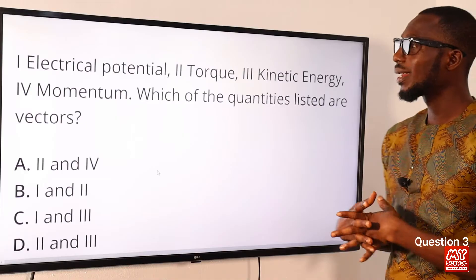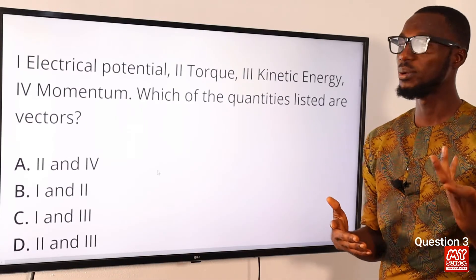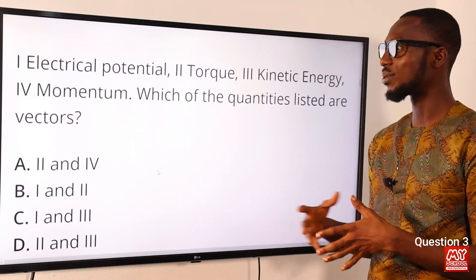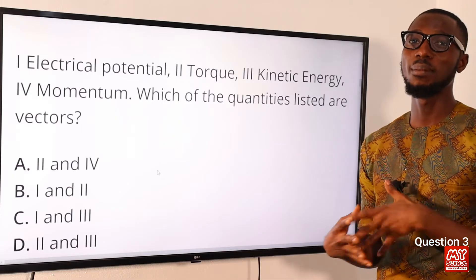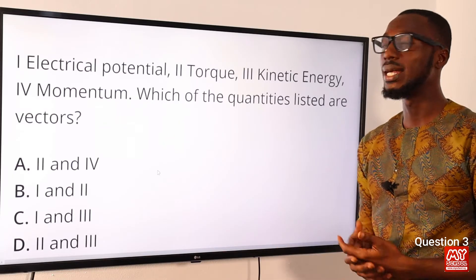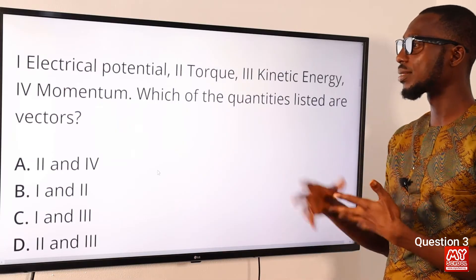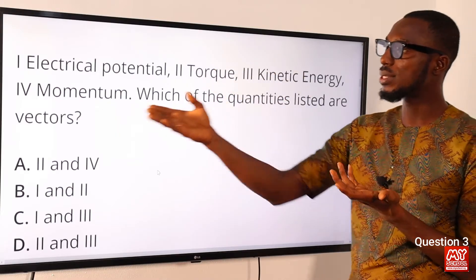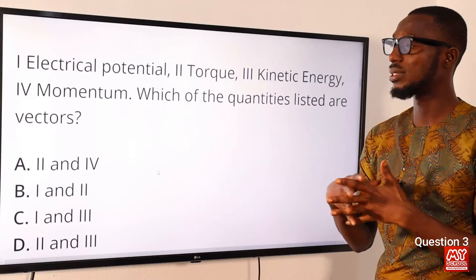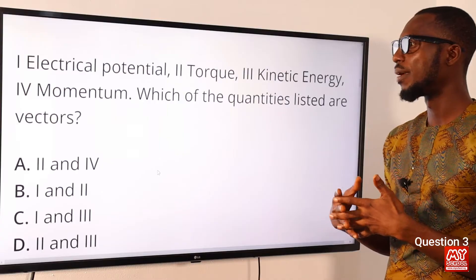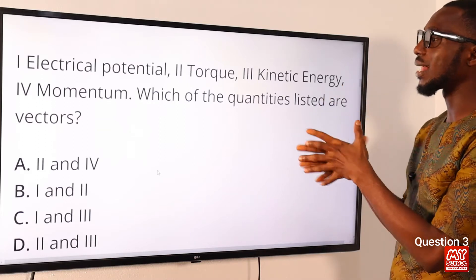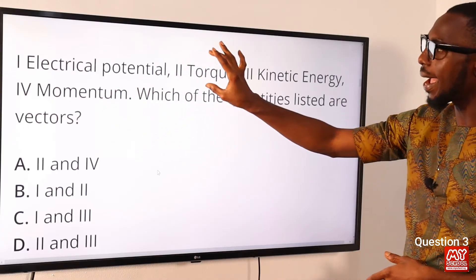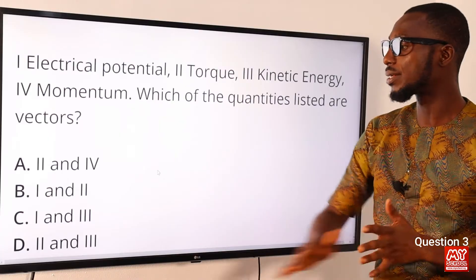Question three: electric potential, torque, kinetic energy, momentum — which of these quantities are vectors? Scalar quantities include electric potential, kinetic energy, length, mass, distance, and volume. Vector quantities here are torque and momentum, because when you check their definitions, both torque and momentum are vector quantities. Other examples of vector quantities include force. So the correct options are torque and momentum — that is option A.